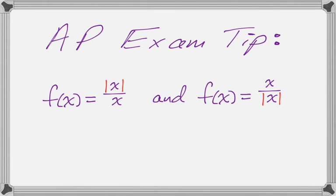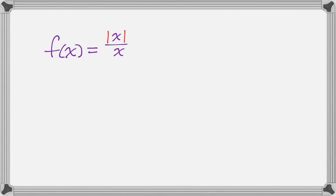In this video we're going to talk about a function that comes up sometimes, especially on the multiple choice section of the AP exam, and if you've never thought about it, you might get a little thrown off by it. That function is |x|/x or x/|x|, because it turns out that f(x) = |x|/x is also equal to x/|x|.